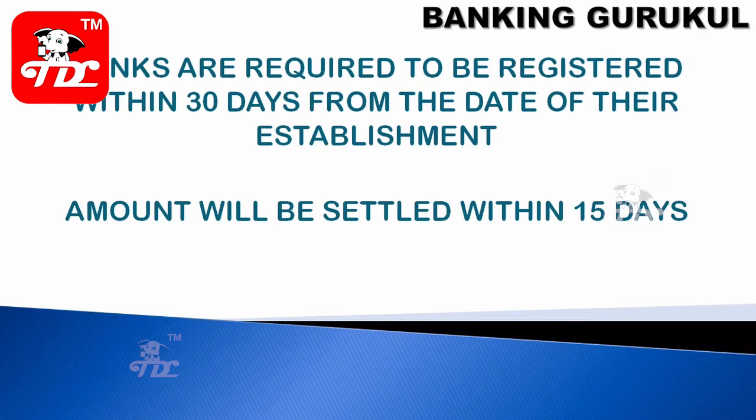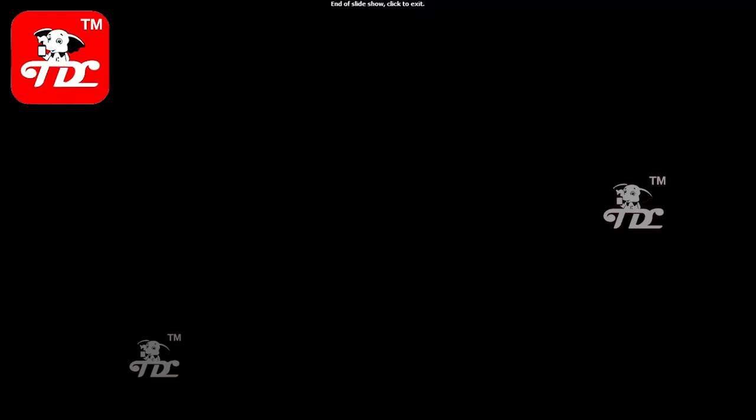As a rule, when a bank starts operations, it must become a member of DICGC within 30 days. If the bank is unable to pay, it takes 15 days to settle the money through DICGC — within 15 days you will get back your money.